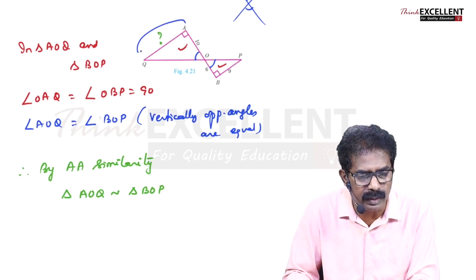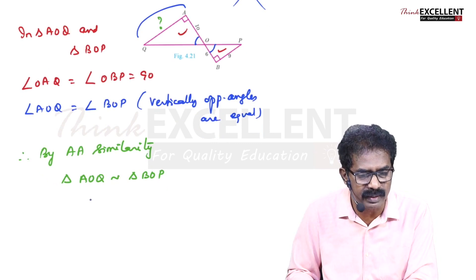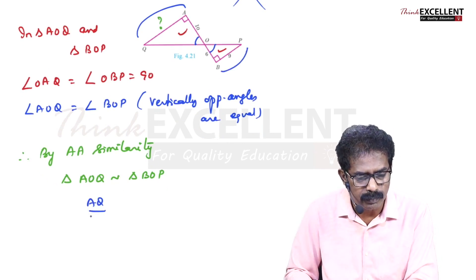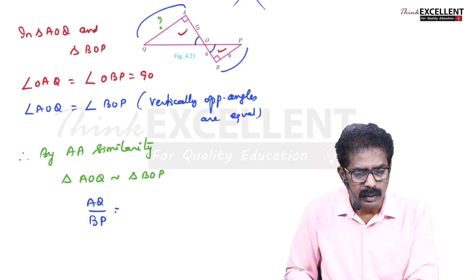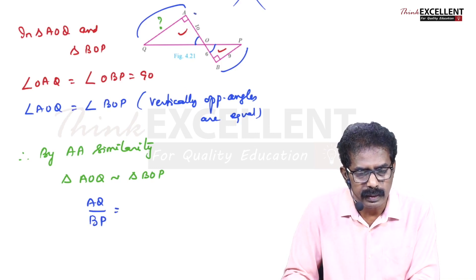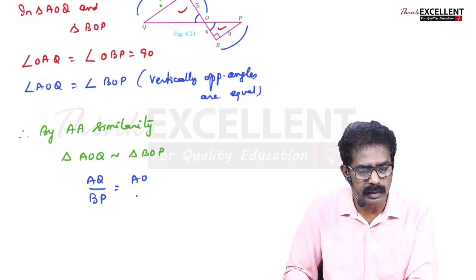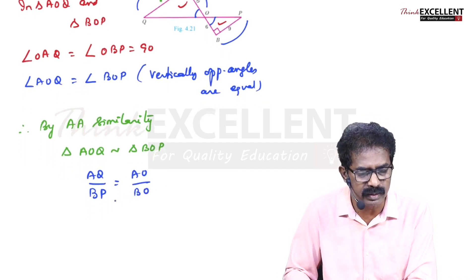I want to find AQ, so if I take AQ by BP, it is equal to AO by BO. That is enough.